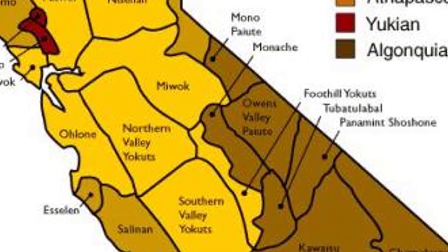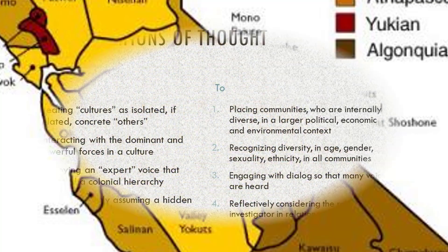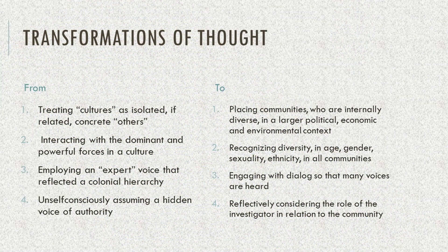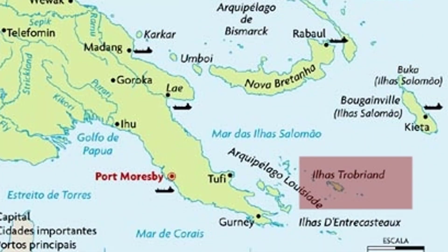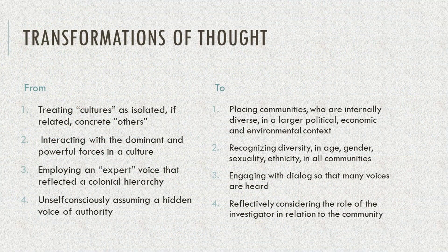If you look at Boas's student Kroeber, talking about Native American cultures within California as almost isolated others — as if the Yokuts were highly differentiated from the Menachee — he treated each one as a concrete other. The Malinowskian approach of looking at the Trobrianders as if they are a concrete and isolated other, editing out every instance of connection with a broader public, was very typical of the early 20th century. The people that anthropologists interacted with tended to be dominant and powerful forces within that culture.